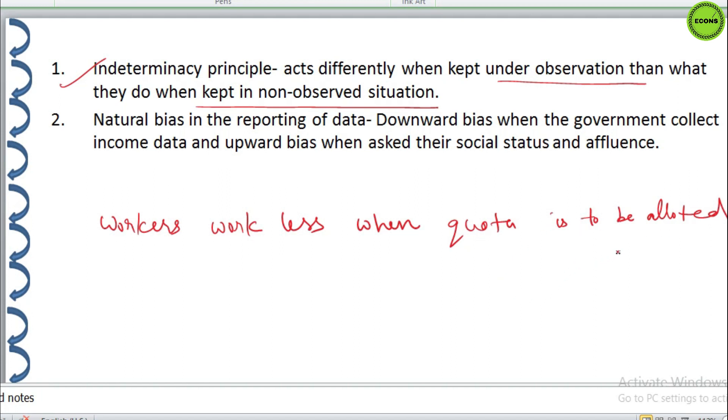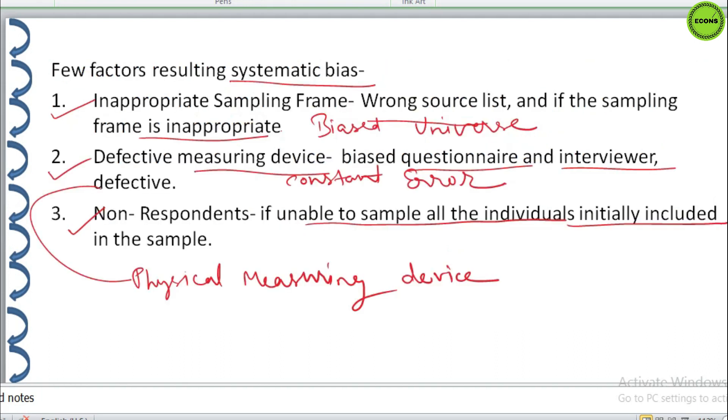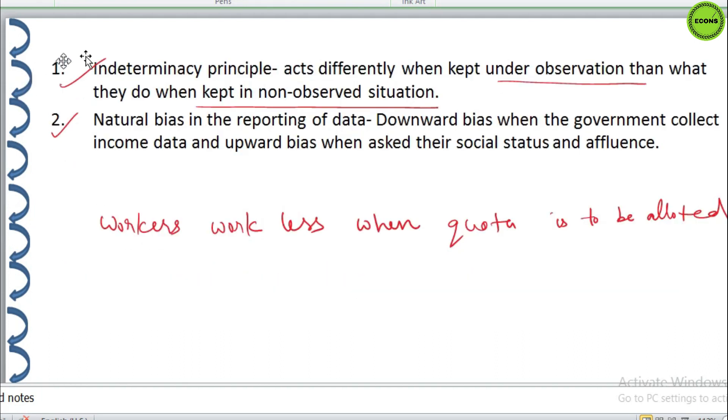Thus, indeterminacy principle may also be a cause of systematic bias. Next point is natural bias in the reporting of data. Natural bias of respondents in the reporting of data is often the cause of systematic bias in many inquiries. There is usually a downward bias in the income data collected by government taxation department, whereas we find an upward bias in the income data collected by some social organizations. Like, people in general understate their income if asked about it for tax purpose.